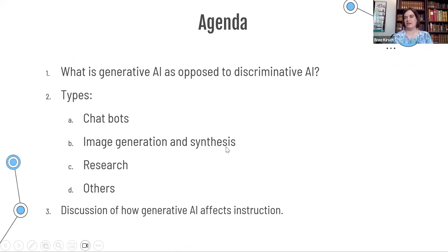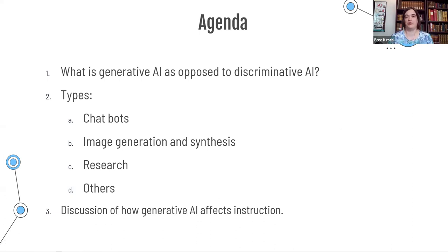Here's our agenda. We'll chat about what generative AI is as opposed to discriminative AI. Then we'll talk about some of the different types of chatbots that are out there, as well as image generation and synthesis, research, and other types of generative AI. Then we will also have a discussion of how generative AI affects instruction.